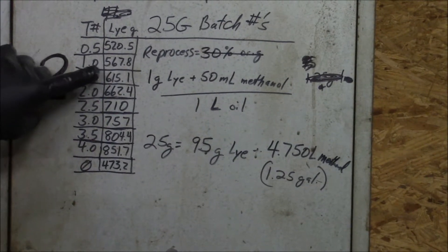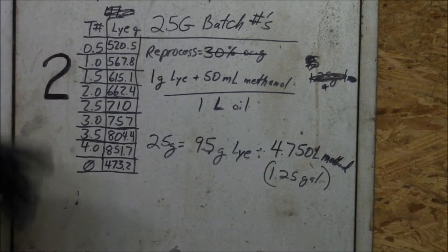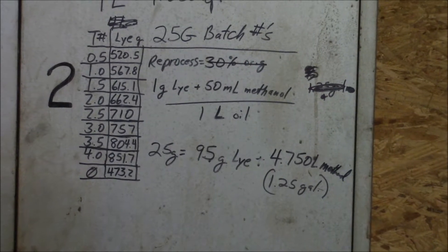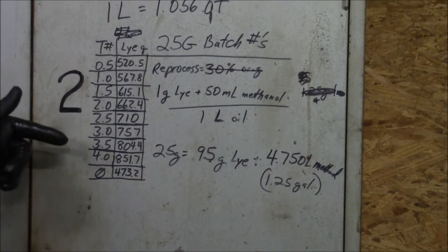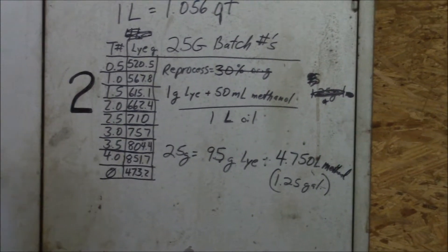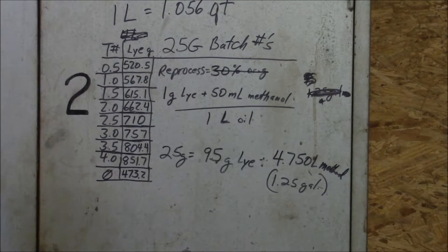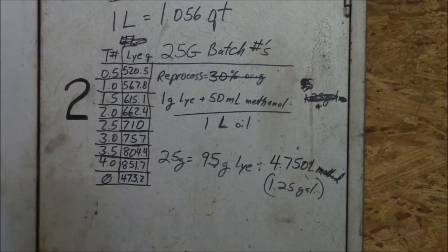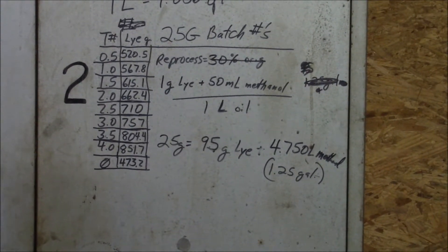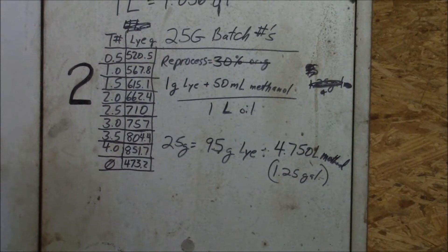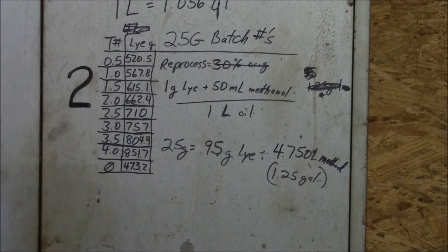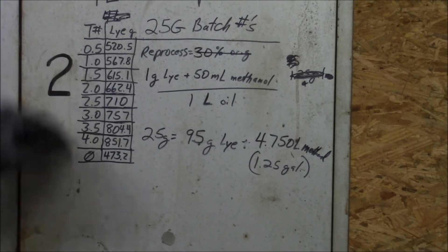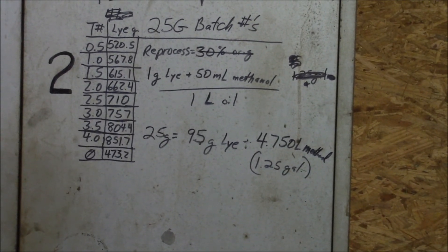So one is our number. Instead of calculating this every time, I just made this chart. If you have a specific processor with a specific number of gallons or liters of product, a chart like this would be awesomely handy. So to our methanol — which is going to be 20% of the total amount of oil in the processor — being that I've got 25 gallons of oil, I am going to use approximately 5 gallons of methanol. And to that methanol, we're going to add 567.8 grams of lye.